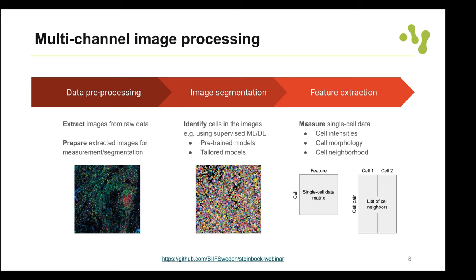We've now extracted pretty much all information we can extract for individual cells from these images. The data so far consists primarily of TIFF files and CSV files per image, which may not be the best input for various downstream tools — especially because all files are currently per image, not one file containing all cells across all images.